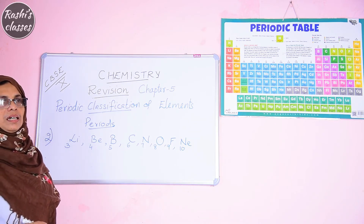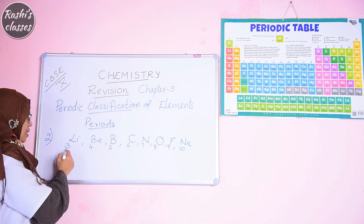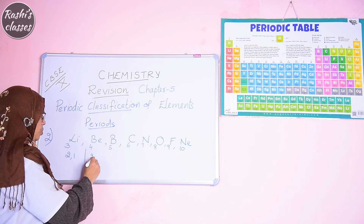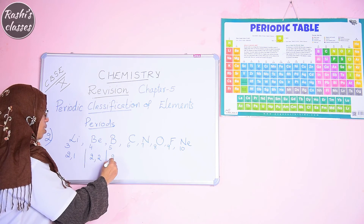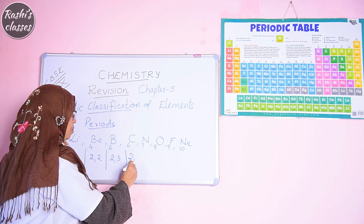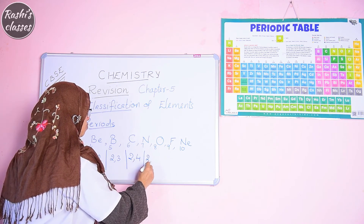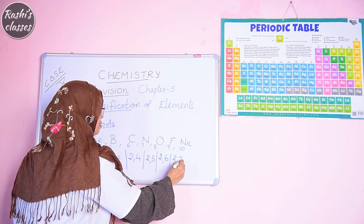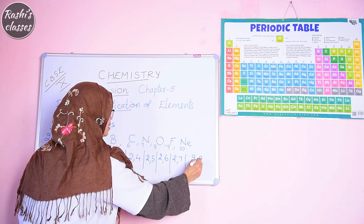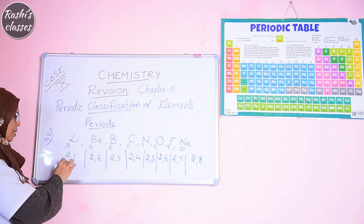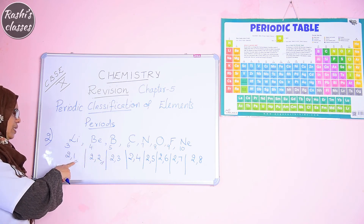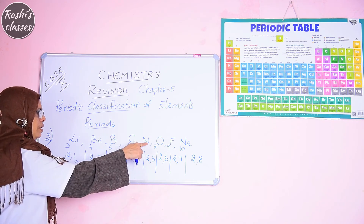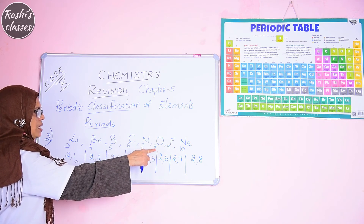Writing the electronic configurations for period 2: lithium is 2, 1; beryllium is 2, 2; boron is 2, 3; carbon is 2, 4; nitrogen is 2, 5; oxygen is 2, 6; fluorine is 2, 7; and neon is 2, 8. The valence electrons are 1, 2, 3, 4, 5, 6, 7, and 8 respectively — they change across the period.